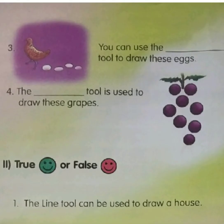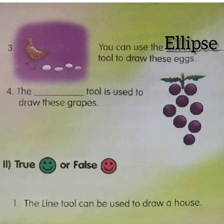Third question: you can use the blank tool to draw these eggs. What is the shape of these eggs? Ellipse. So we can use the ellipse tool to draw these eggs. The answer is ellipse tool. Write the answer ellipse.